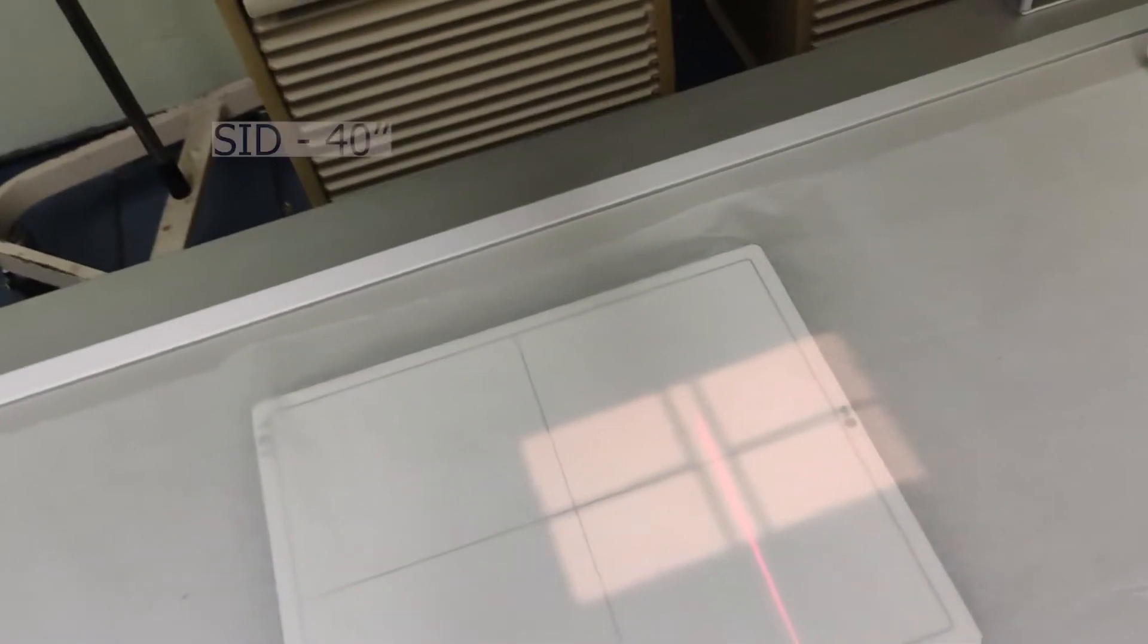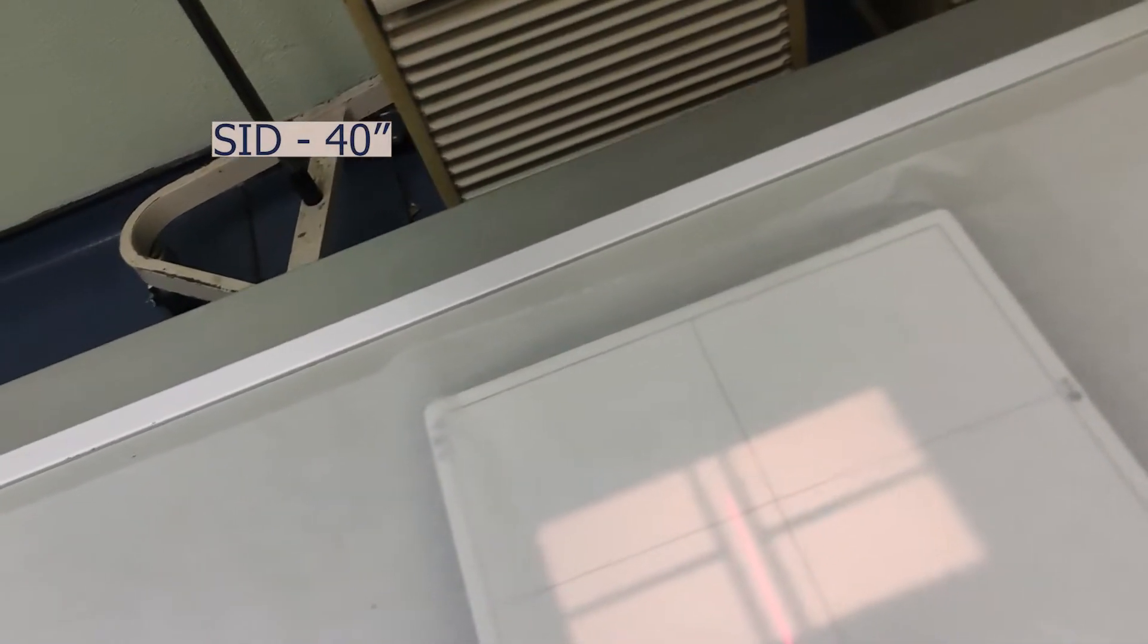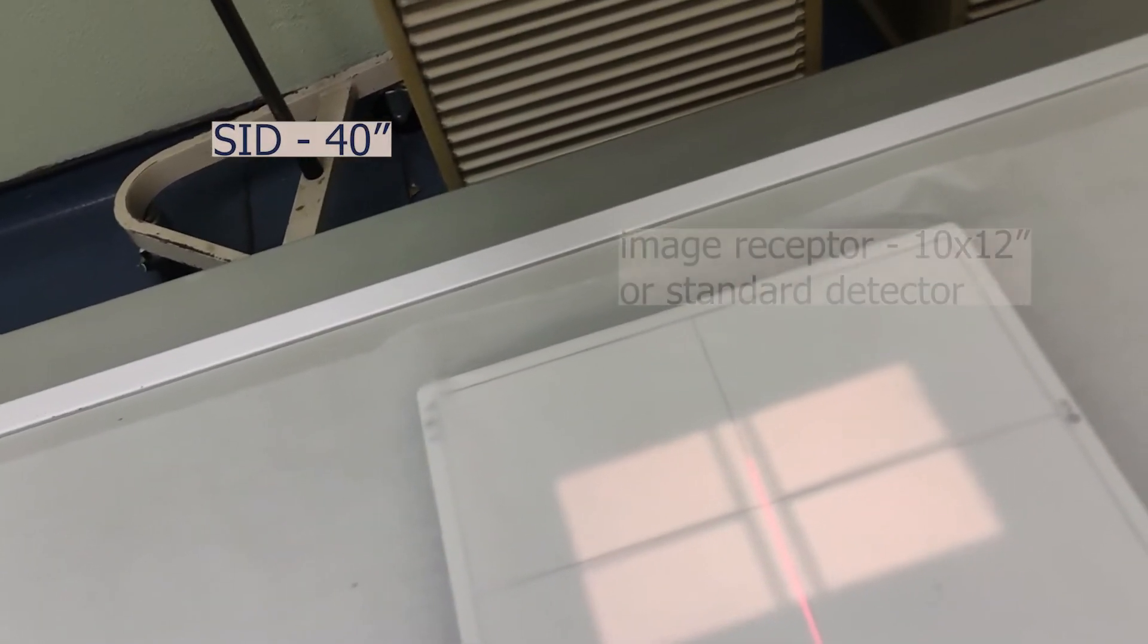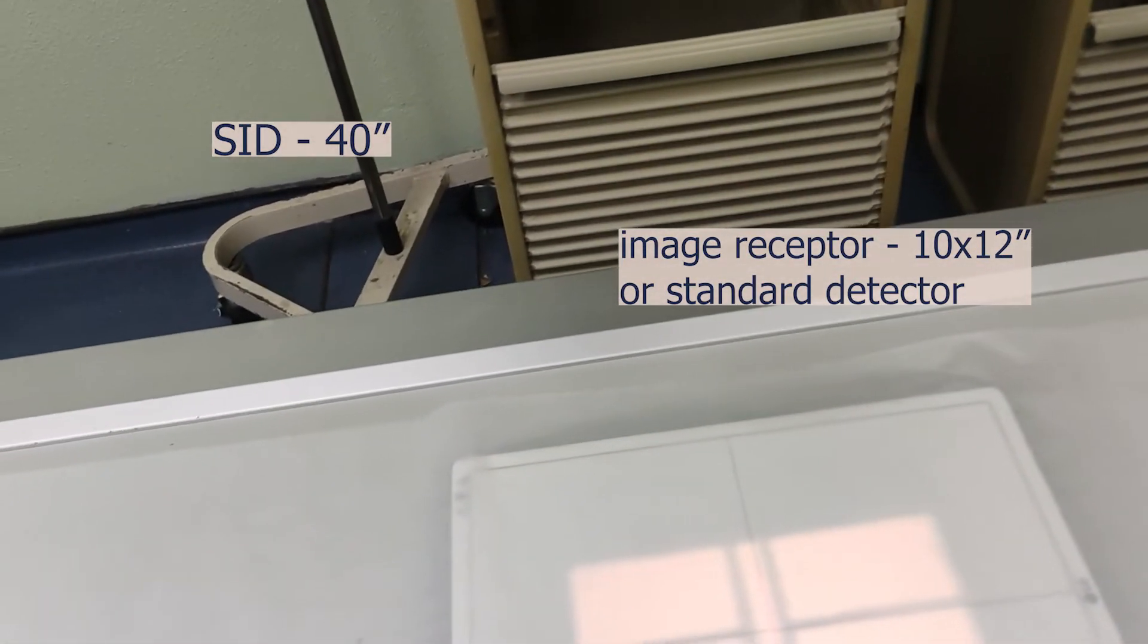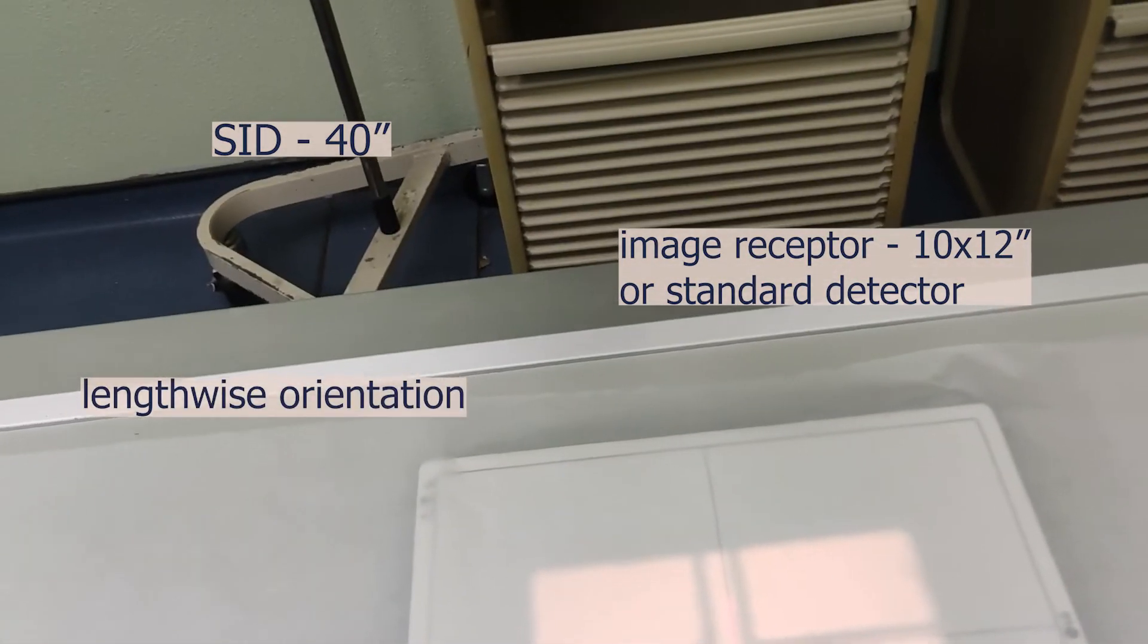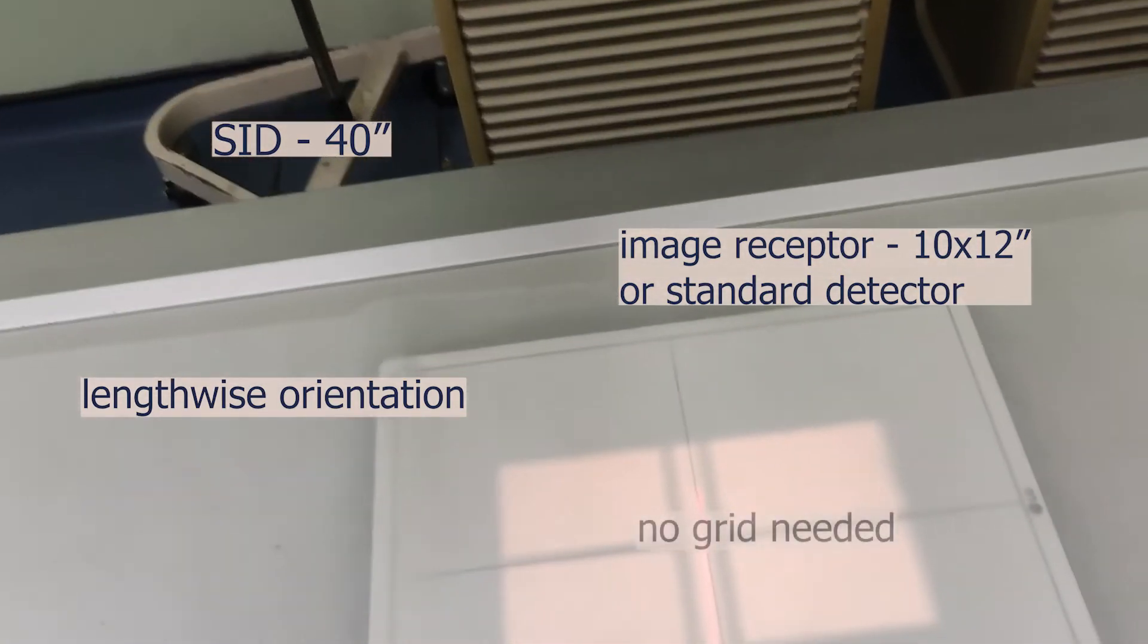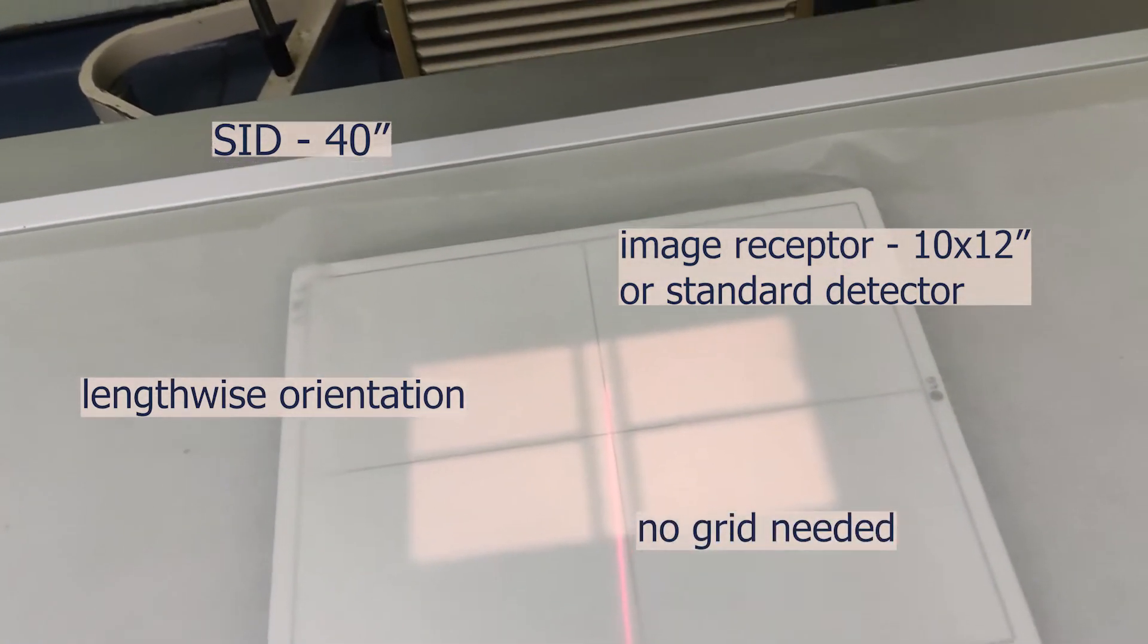So I have the tube here and the energy detector and everything lined up and I'm going to be demonstrating the AP, lateral and mortise view of the ankle and I'll also explain what they are used for, what you get to see when you do those particular views.